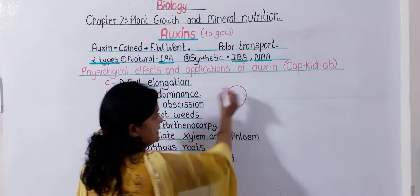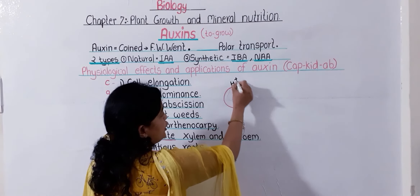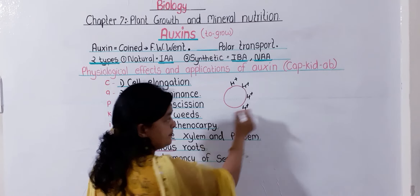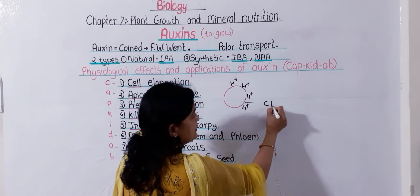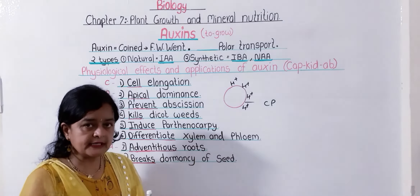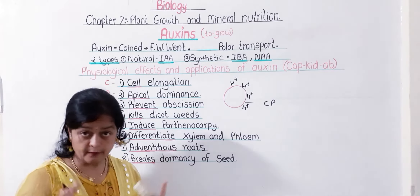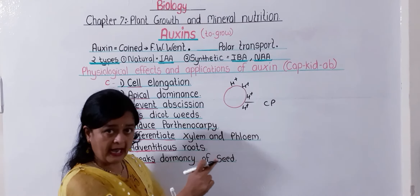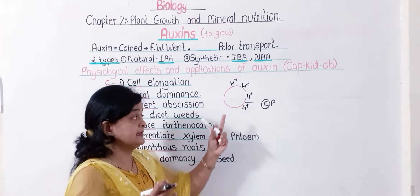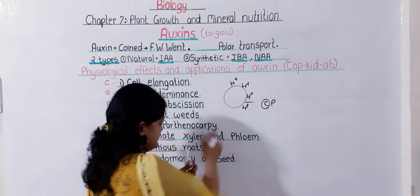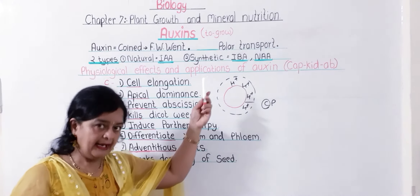Auxins are responsible for elongation or enlargement of the cell. Auxin accumulates proton ions in the wall of the cell. The cell wall is made up of cellulose. Because of the accumulation of these proton ions, the cellulose present in the cell wall gets loosened, and there is elongation — the cell enlarges. This is how auxin is responsible for cell elongation.